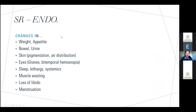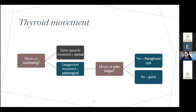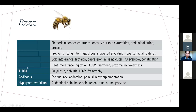Endocrine systems review: ask about changes in all the relevant areas. For thyroid neck examination — the confusing bit in questions is the movement test. First check if the lump moves on swallowing. If it moves a lot, something's wrong. Then test if it moves when they stick out their tongue: yes means thyroglossal cyst; no means goitre.